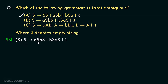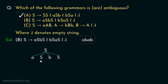Now let's observe grammar B. S can be rewritten as ASBS, BSAS, or lambda. Let's see what happens if we try to derive the string 'abab'. Starting from S, using the first rule we derive ASBS. From the inner S, using the second rule, we derive BSAS.